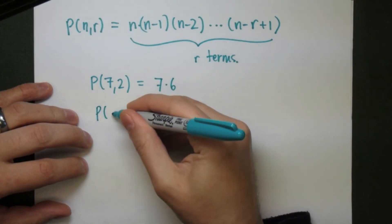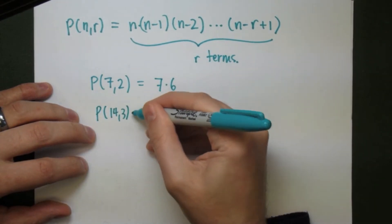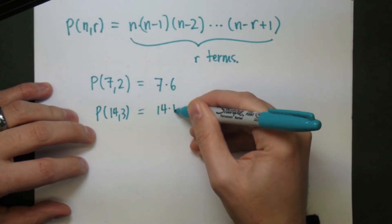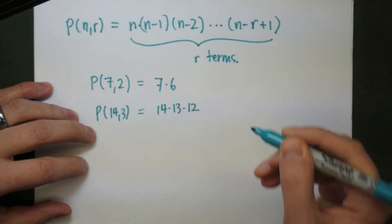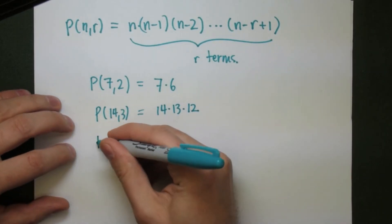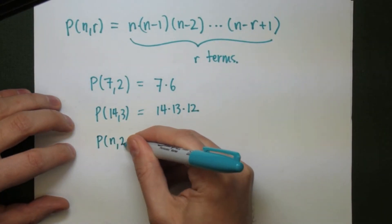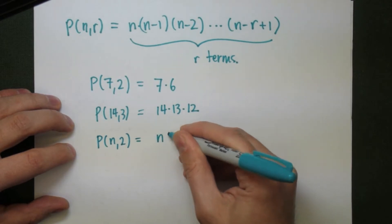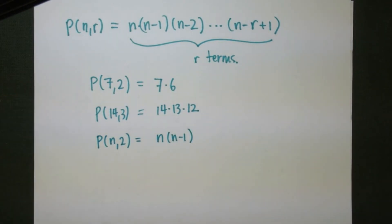Another example: P(14,3) will be the number of ways to arrange three out of 14 objects. That'll just be 14 times 13 times 12, which is 2,184. If for an arbitrary number n we want to see what P(n,2) is, we're going to multiply n times the number smaller than n — n times n minus 1.